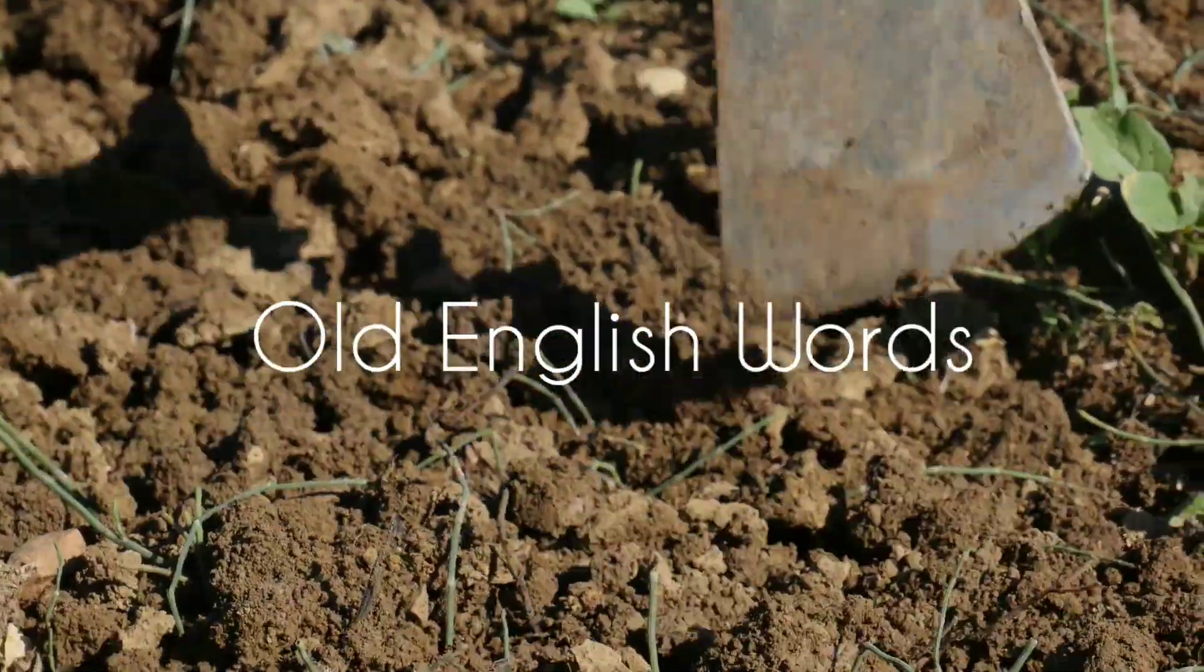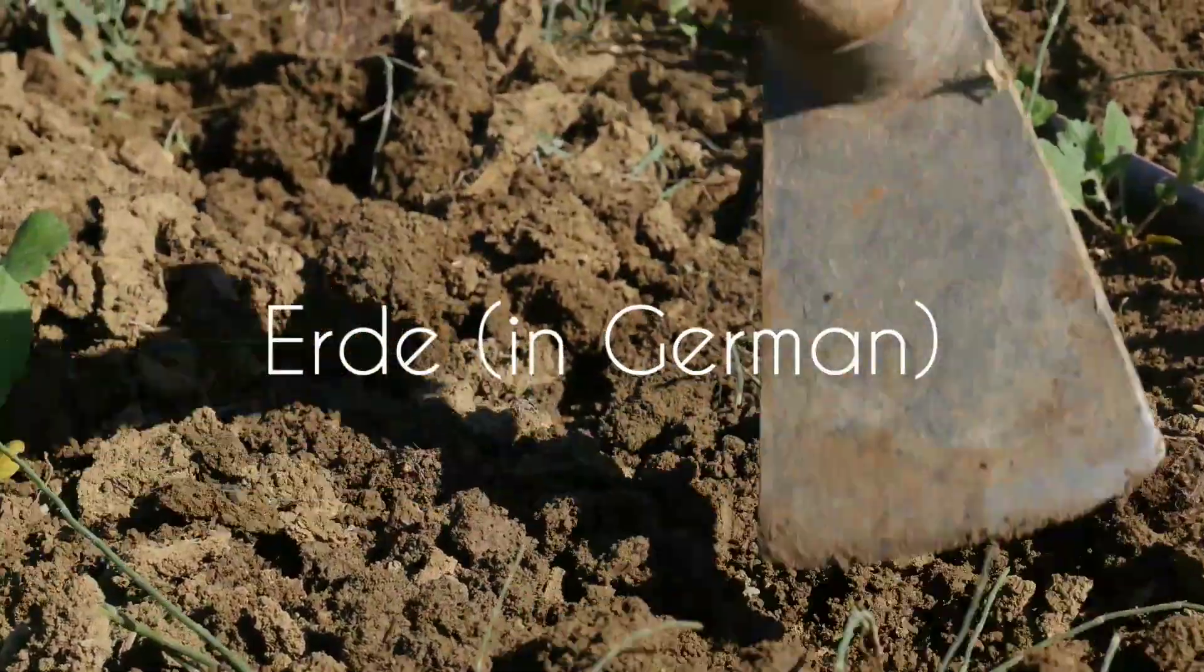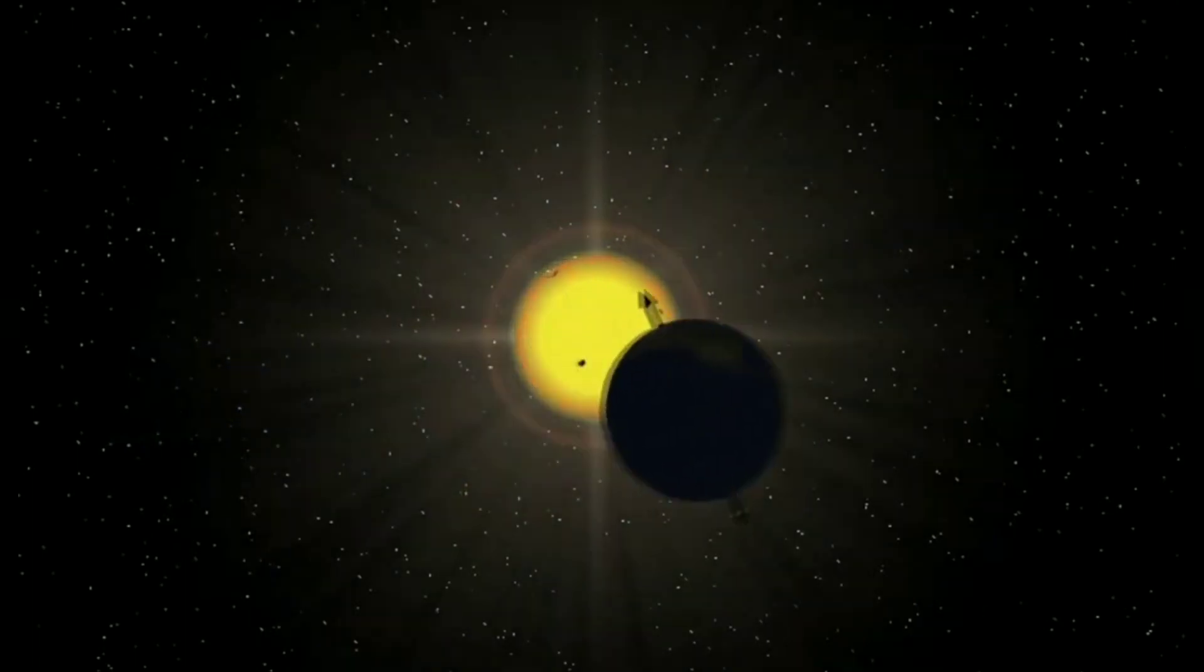It comes from the Old English words E-Orth and Ertha. In German it is Erde. The name Earth is at least 1,000 years old.